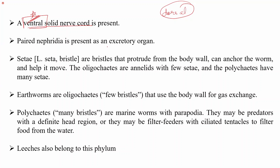For their excretory system, they have paired nephridia as their excretory organ. Another special feature is the presence of setae — bristles that protrude out from the body wall. These setae help in the anchoring of the worm, that is, they help the worm get attached to the ground, and they also help in movement.